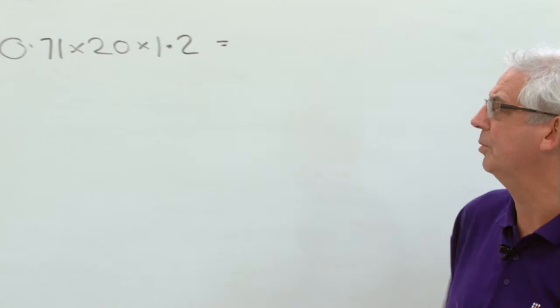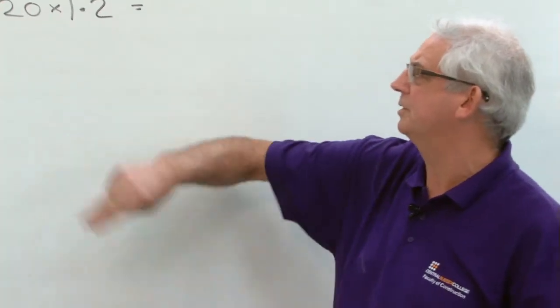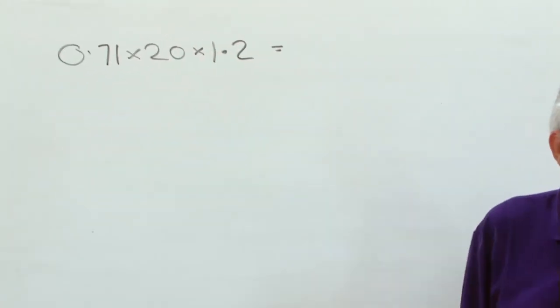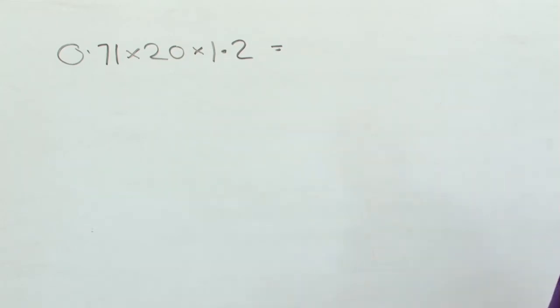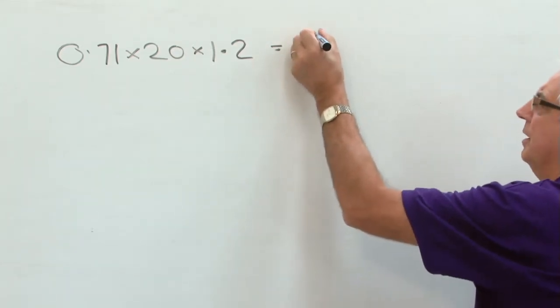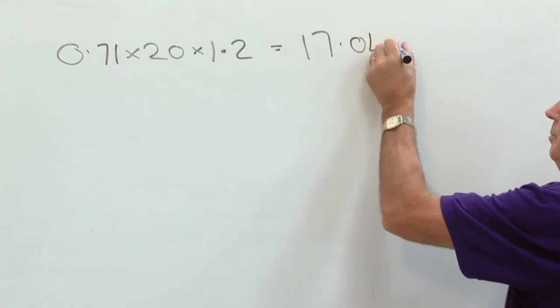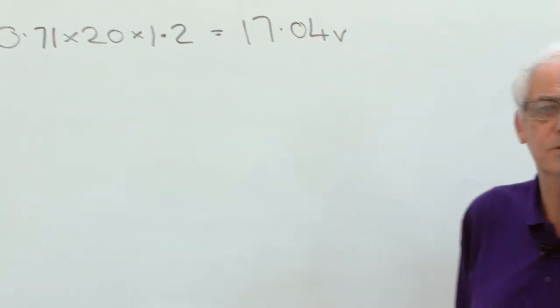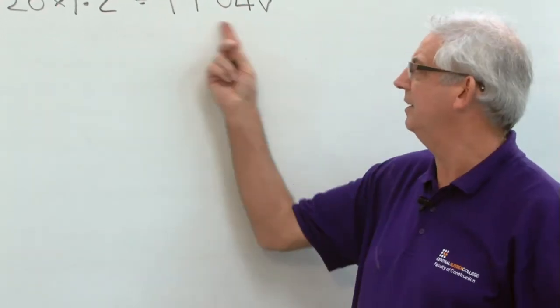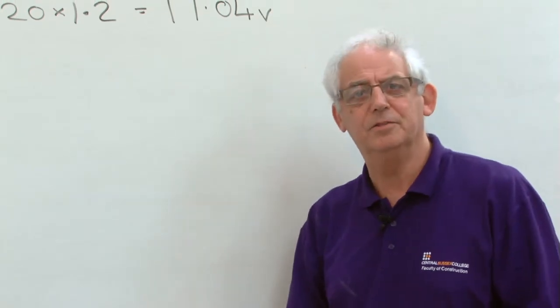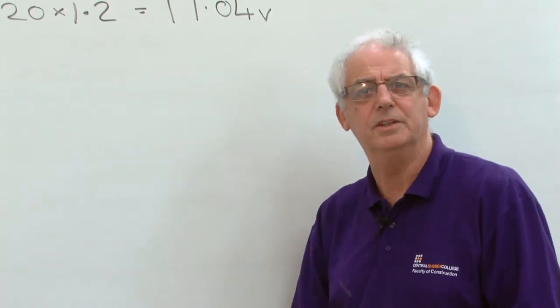Now if I multiply all three together, I've got the resistance times the current which is really just Ohm's law, multiply it by 1.2, I'm going to end up with a value of 17.04 volts. Now clearly that's far greater than the 5% I would be allowed for this circuit, 5% of 230 is 11.5 volts.